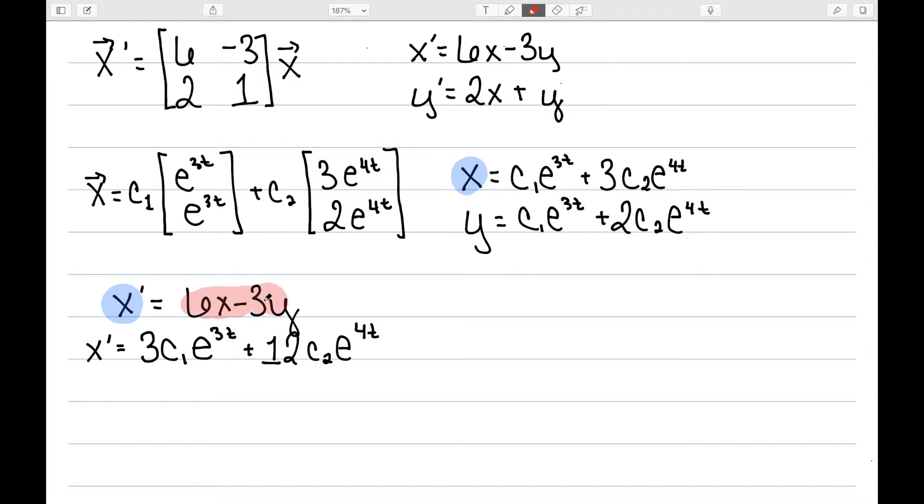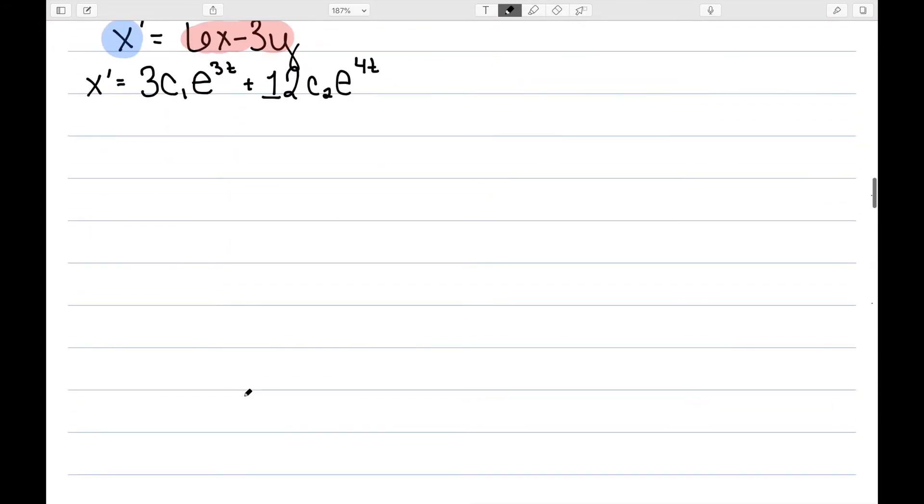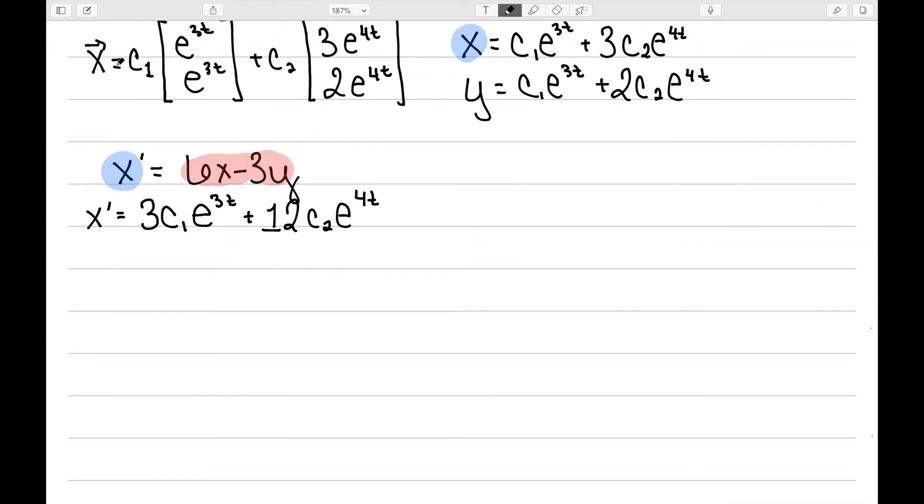And I now want to verify that this is equal to the right-hand side. In order to do this piece, let's scroll down just a little bit. I need 6x - 3y. x we have given up here as c1·e^(3t) + 3c2·e^(4t). I then have minus 3 times y, which is c1·e^(3t) + 2c2·e^(4t).